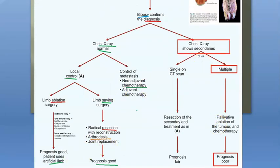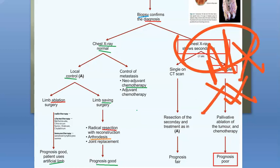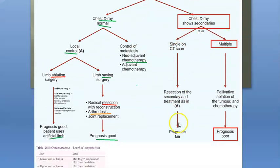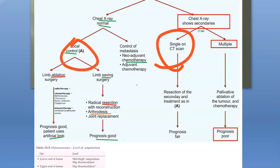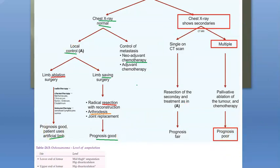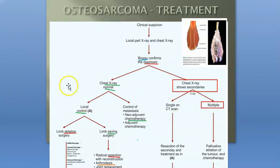If the chest X-ray shows metastasis, CT and MRI are done to determine the extent of spread. If there is a single secondary lesion, the secondary is removed and the local tumor is also treated, similar to local management. Prognosis is fair with a single metastasis. If there are multiple secondaries, the prognosis is poor - palliative ablation of the tumor and chemotherapy are given to prolong life and keep the patient comfortable.